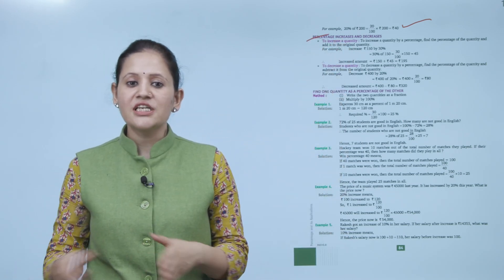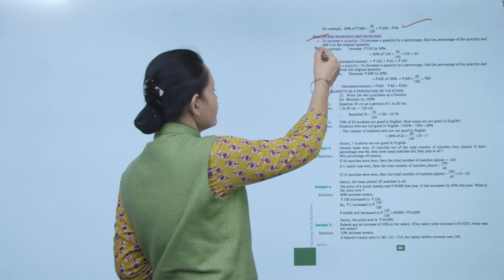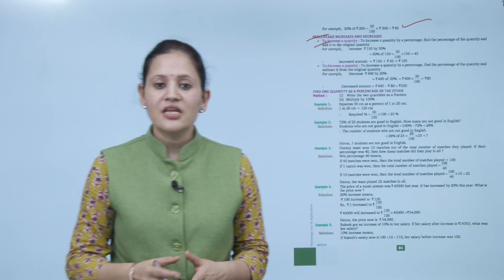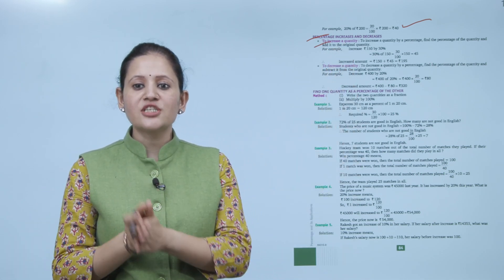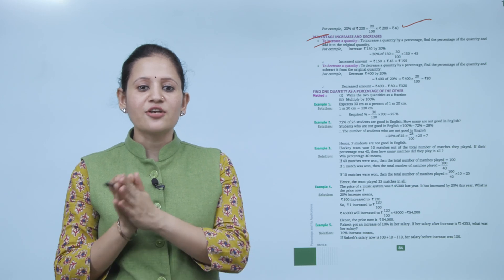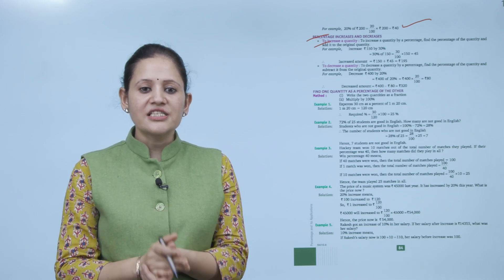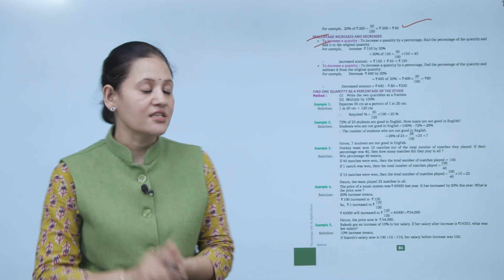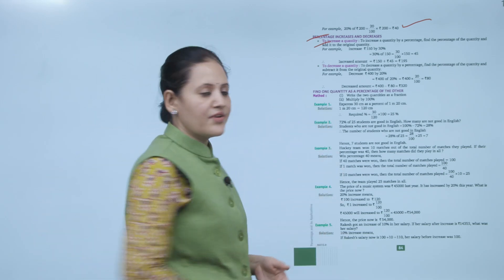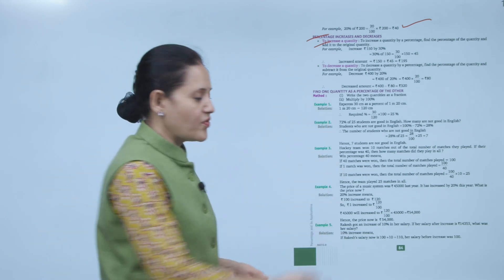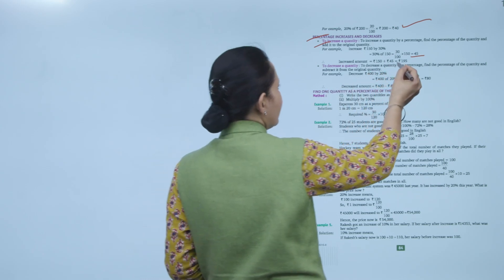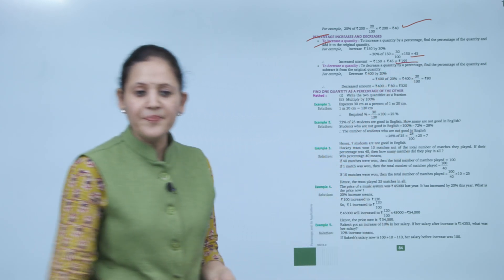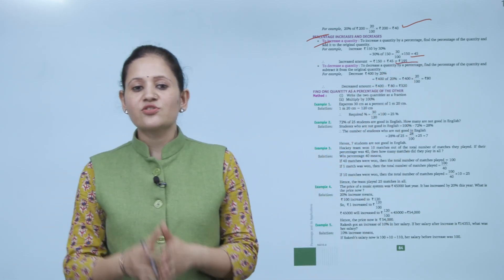Next is percentage increase and decrease. To increase a quantity by a percent, find that percentage of the quantity and add it to the original. For example, increase Rs. 150 by 30%: 30% of 150 = 45, so 150 + 45 = Rs. 195.